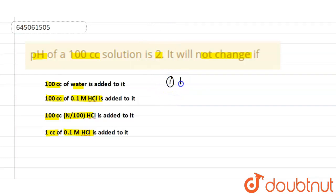The first statement says 100 cc of water is added. When water is added, the solution will become dilute and then the pH increases. So this statement is incorrect.